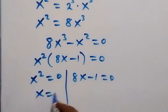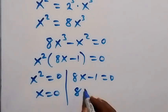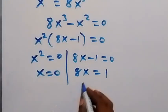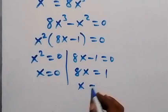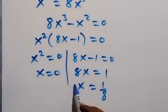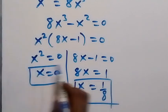From here we have two cases: x squared equals 0, giving x equals 0; or 8x minus 1 equals 0. Taking minus 1 to the other side gives 8x equals 1, then dividing both sides by 8, x equals 1 over 8. So we have these two values of x.